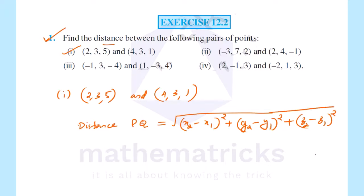This is x1, y1, z1 position: (2, 3, 5). And x2, y2, z2 position: (4, 3, 1).